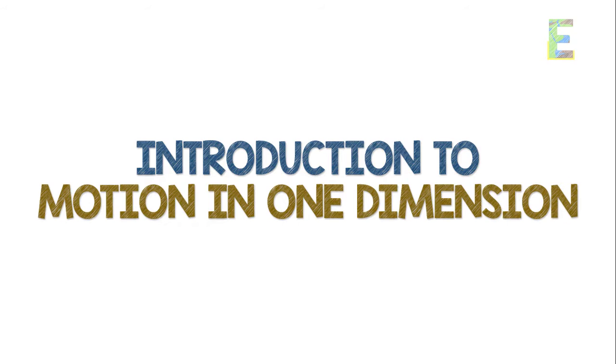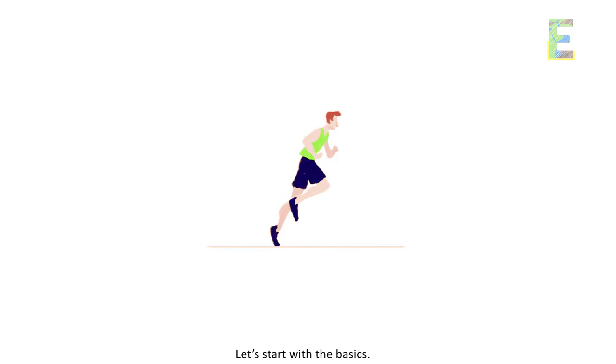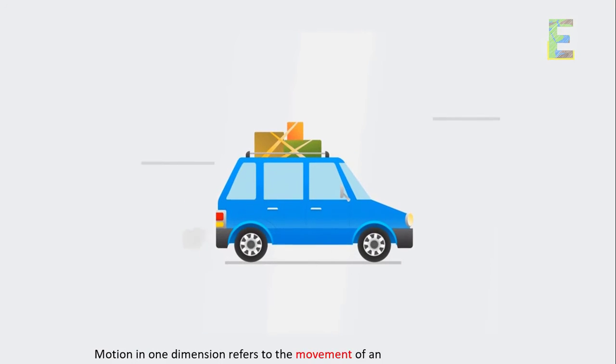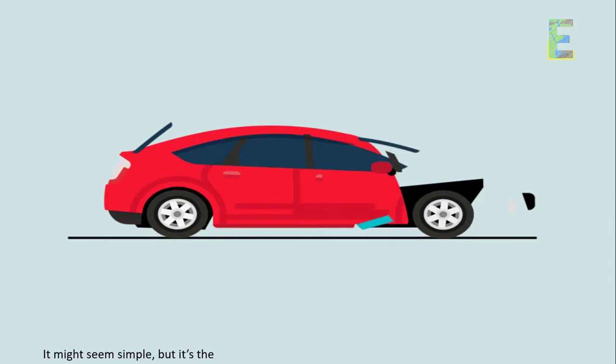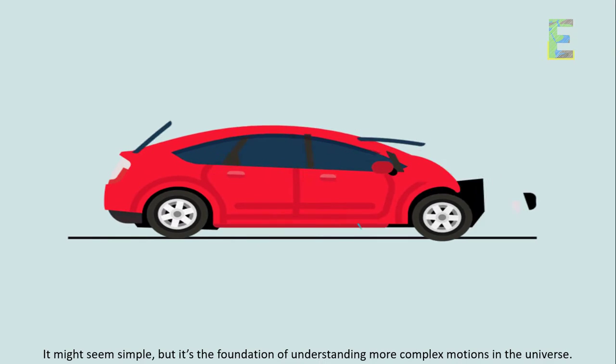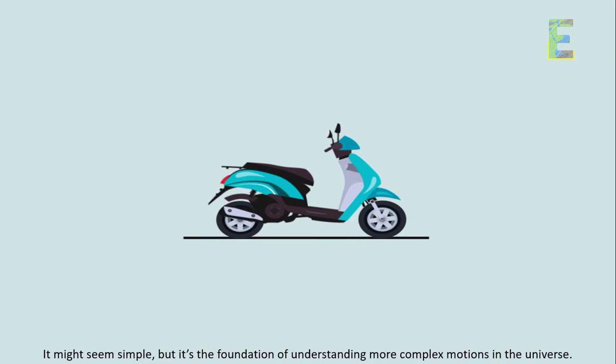Introduction to motion in one dimension. Let's start with the basics. Motion in one dimension refers to the movement of an object along a straight line. It might seem simple, but it's the foundation of understanding more complex motions in the universe.